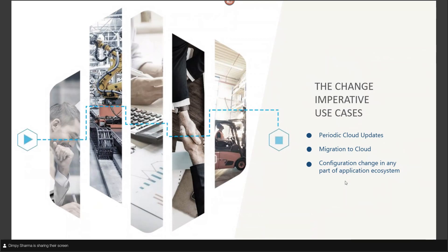Migration to cloud is another use case. Most of us know that we'll have to migrate before 2023 and 2025 respectively in order to move to Oracle Cloud, because support for many legacy applications and their versions is stopping. The question is: what should my migration strategy be, and how should I migrate from the legacy instance to Oracle Cloud? Many of us fear that because of whether we will be able to test it properly in order to have a seamless production release.